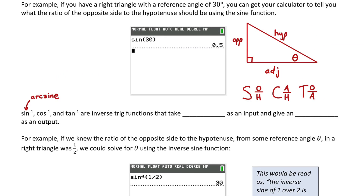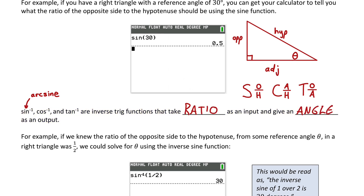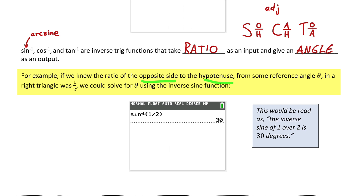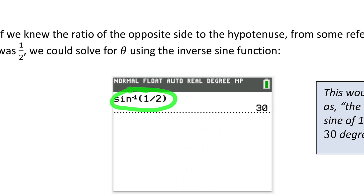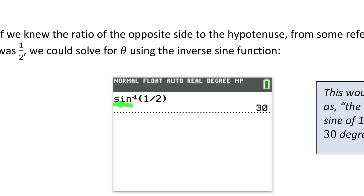Since inverses do opposite operations, inverse sine, inverse cos, and inverse tan take a ratio as an input and output an angle. For example, if we knew the ratio of the opposite side to the hypotenuse was one half, we could solve for the missing angle using the inverse sine function. Typing inverse sine of one half into your calculator, it knows the input is the ratio of sides and outputs the reference angle — 30 degrees — that has that ratio of sides.